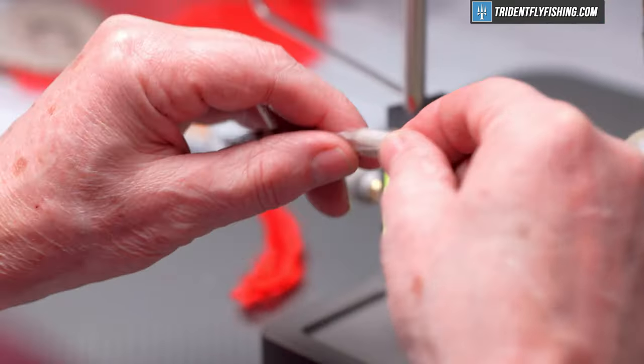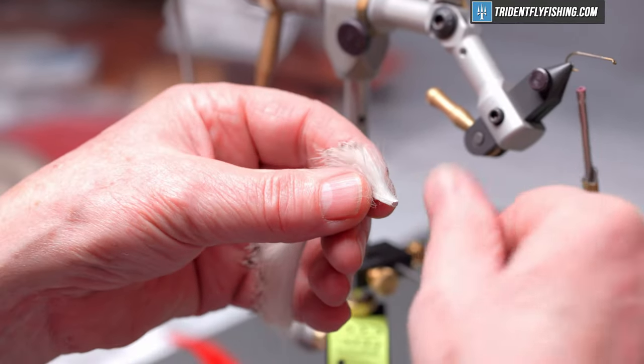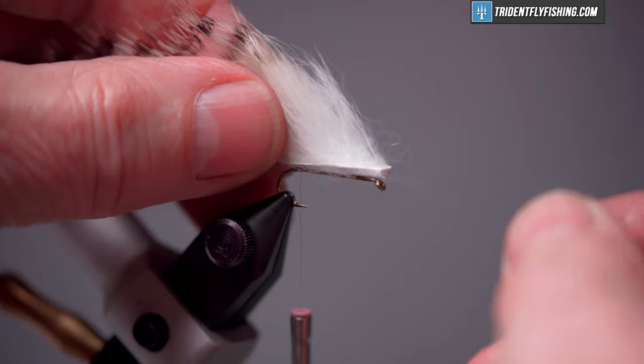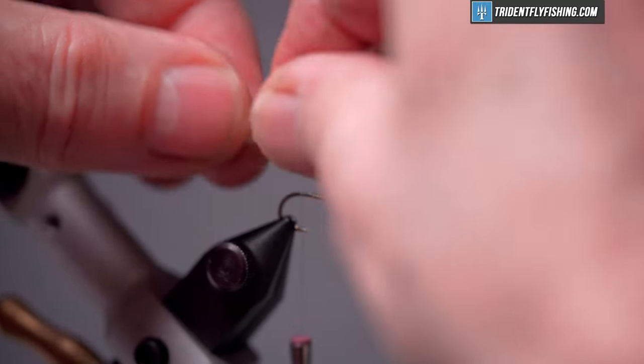We'll tie in our first material which is just going to be a grizzly zonker strip and we'll measure this out to be about up to the hook eye. Then we'll separate out the hair from the leather to give us a nice clean tie-in point.